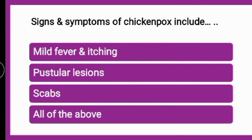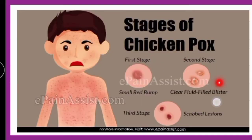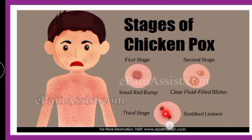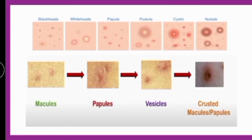Signs and symptoms of chickenpox — whether they include mild fever, itching, pustular lesions, scabs, or all of the above. The correct answer is all of the above. These represent the stages of chickenpox: first stage is a small red bump, second stage is a fluid-filled blister, and the third stage is the dried blister, that is a crusted lesion.